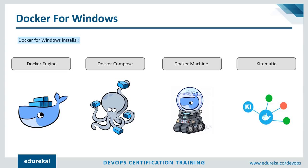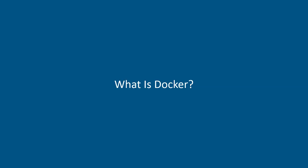The next component is Docker Compose, which is basically used to run multiple Docker containers at once. After that we have the Docker Machine, which is used to install the Docker engine — it is basically what you install on your local system. Docker Machine has its own client known as Docker Machine, and a Docker engine client known as Docker. At last we have Kitematic, which is an open source project built to simplify the use of Docker on Windows. It helps automate the installation of Docker and provides an interactive user interface for running Docker containers — it's more like a UI tool.